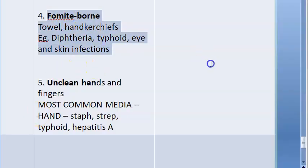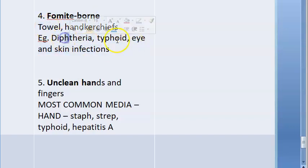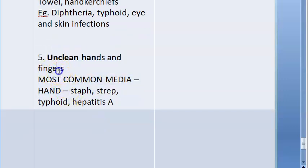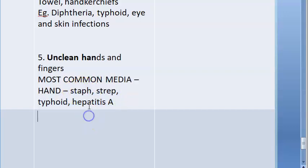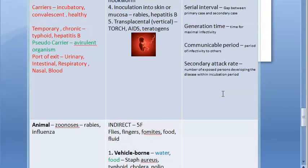Fomite transmission: you touch the towel of somebody else and get trachoma or eye infection, skin infections, diphtheria. Diphtheria is actually a respiratory droplet infection. Typhoid via unclean hands - fingers have auto-inoculation of parasites. Hand washing can prevent staph, strep, typhoid, hepatitis A. Typhoid transmits in multiple ways; hepatitis A is food infection. We're done with modes of transmission - direct and indirect in detail.